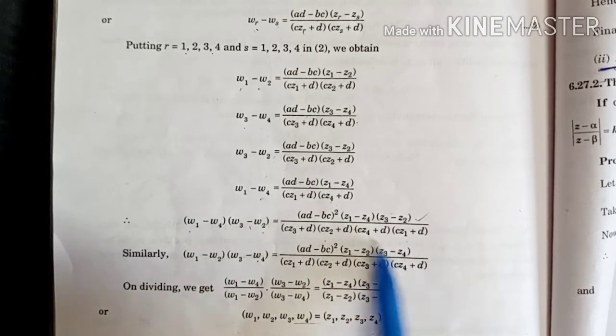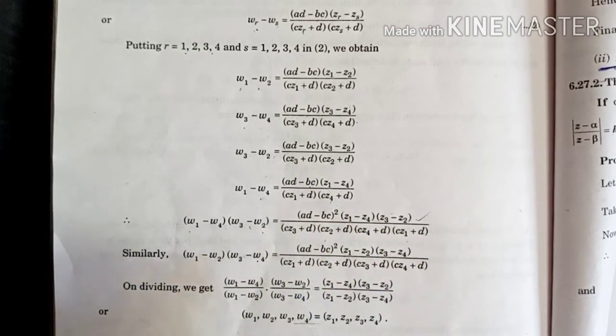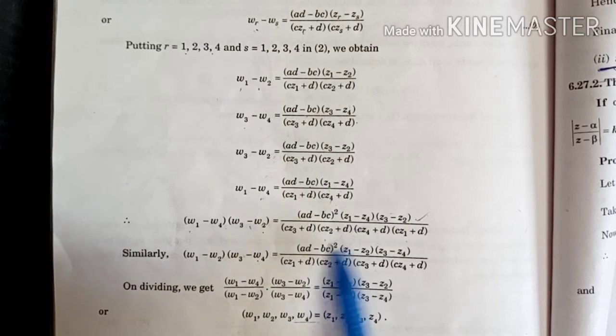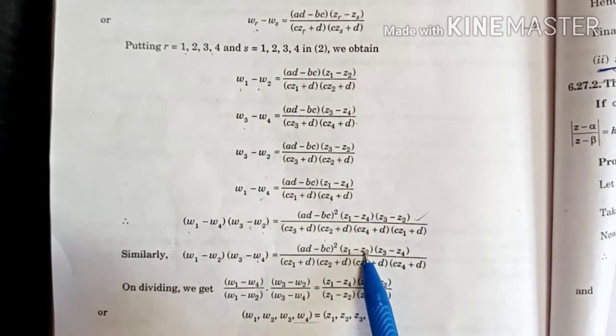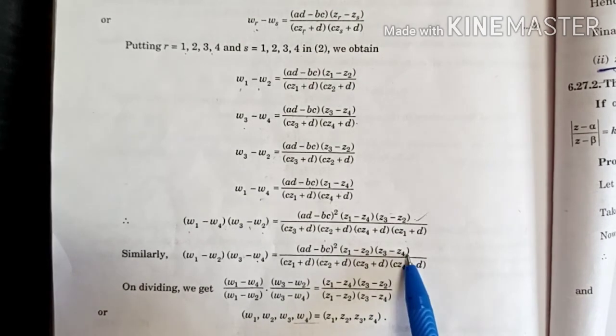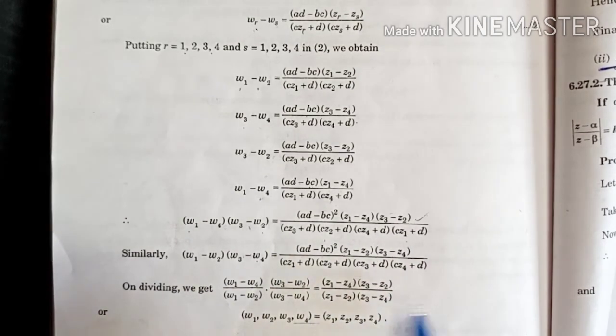These are same, these two, these two, and these two. So denominator will cancel. From here these two also cancel. Above Z1 minus Z4, Z3 minus Z2, below Z1 minus Z2 by Z3 minus Z4 will remain.